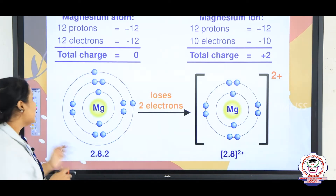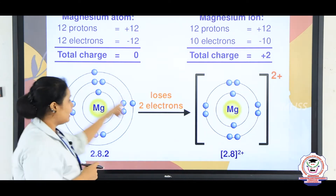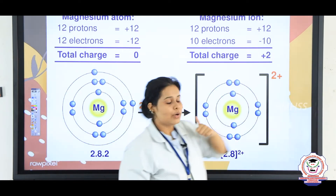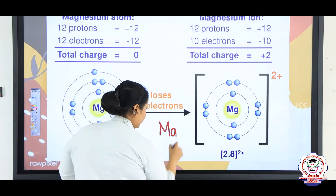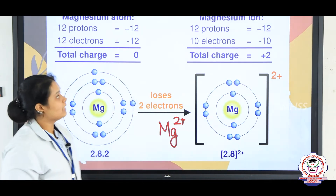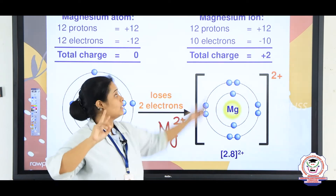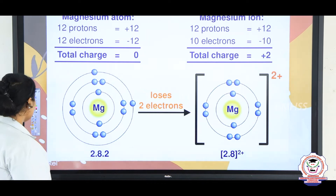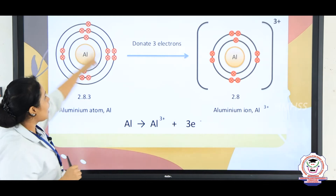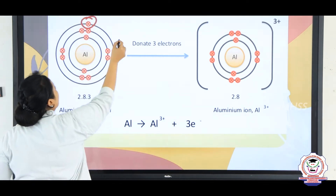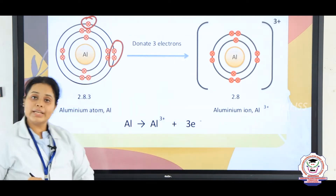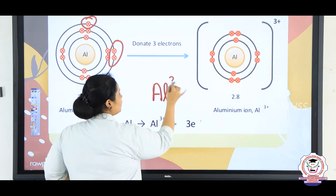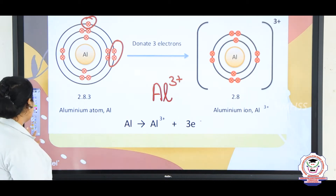For 2-electron removal, if you take magnesium, the outer shell has 2 electrons. If it removes the 2 electrons, it will become Mg2+. For aluminum, the outer shell has 3 electrons. If it removes the 3 electrons, it will have the valency as plus 3 and aluminum is written as Al3+. This is the trivalent positive valency.